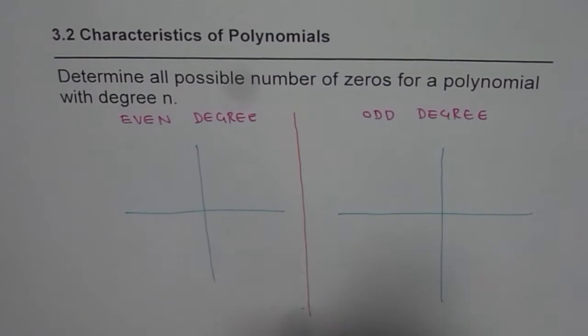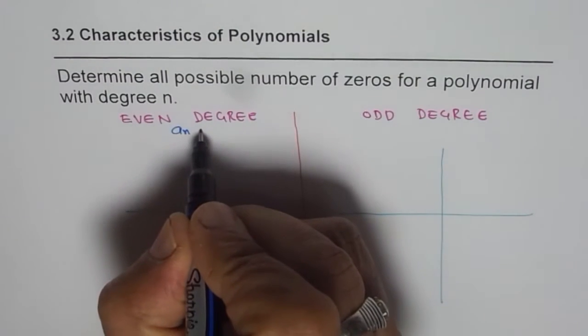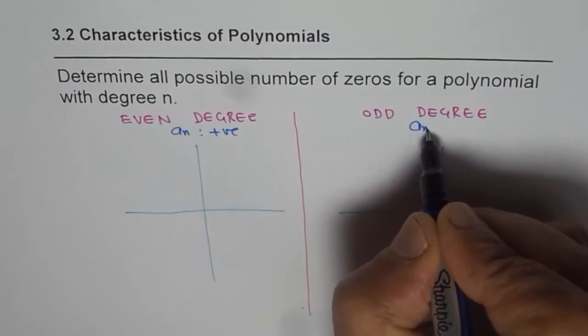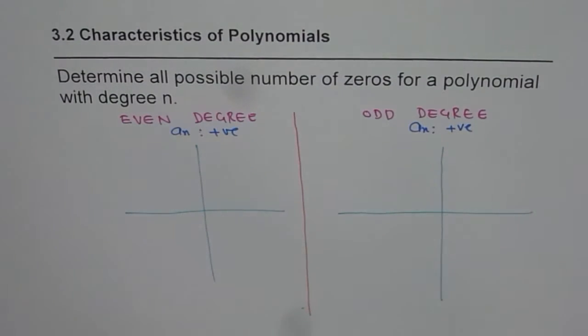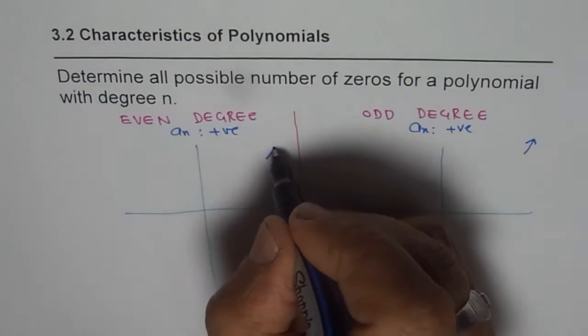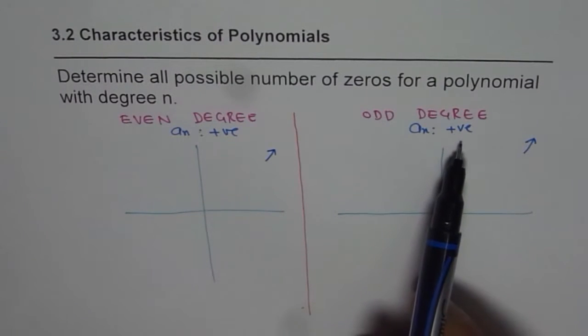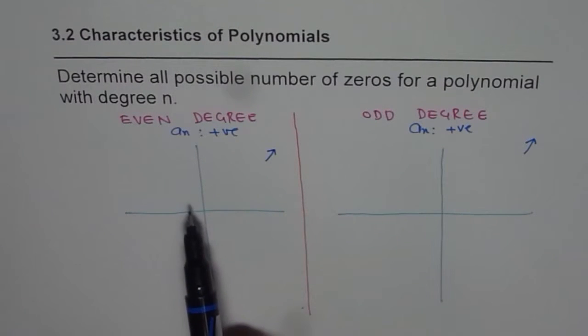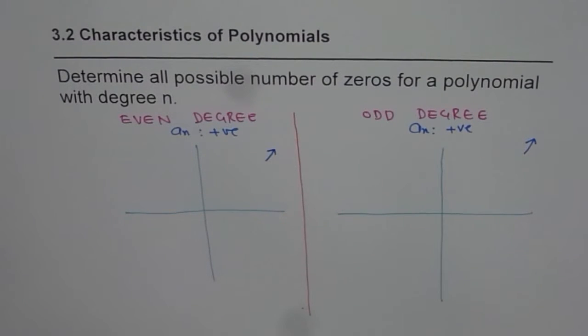Now for the sake of drawing diagrams, I will say the leading coefficient An is positive for both of them. That means the right side is up. So for the graph, right side will be up. I'm assuming the leading coefficient is positive. On the left side I'll draw even degree polynomials and on the right odd degree polynomials, and then we'll try to figure out the possible number of zeros.